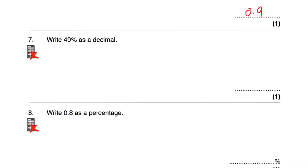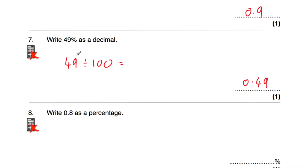Question number seven says write 49% as a decimal, so it's going to be 0.49. We could take the 49 and divide by 100, moving the digits two columns to the right. The 4 in the tens moves into the units and then into the tenths. The 9, which is in the units, moves into the tenths and then into the hundredths. So it's 0.49 — or it's just useful to know that 49% is 0.49.